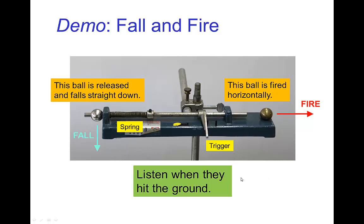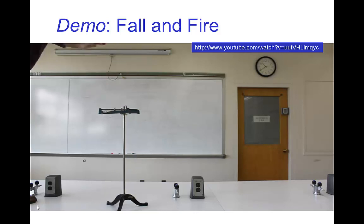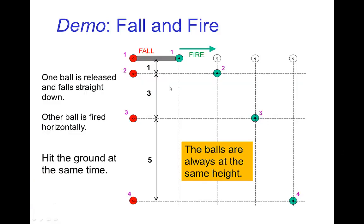Now, it all happens rather quick, so listen to when they hit the ground. In that video, what's happening is one of the balls is falling straight down, the other one is fired, and the ball that's fired has uniform horizontal spacings, but it has the same vertical spacings as the one that's just released. And because of that, the two balls are always at the same height as they are falling. So, they hit the table at the same time.